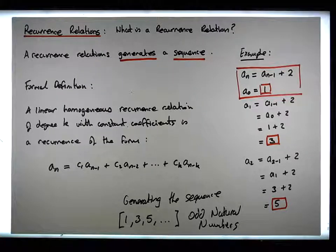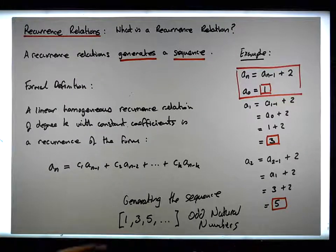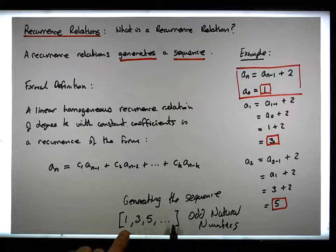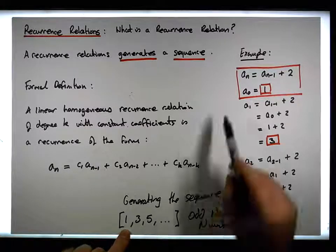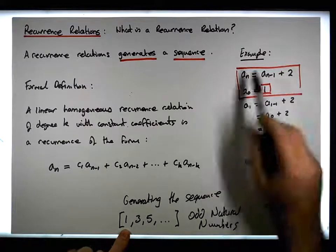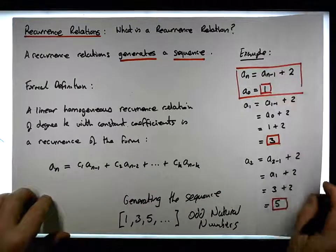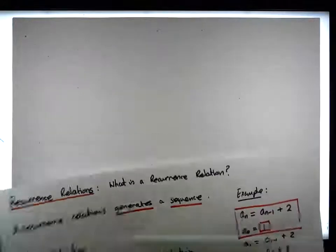In the previous series we generated, we constructed the generating function. Now what we have is the odd numbers, the odd natural numbers, and we have a way to recursively define them. So that's a very simple example. Let's have a look at another example of a recurrence.